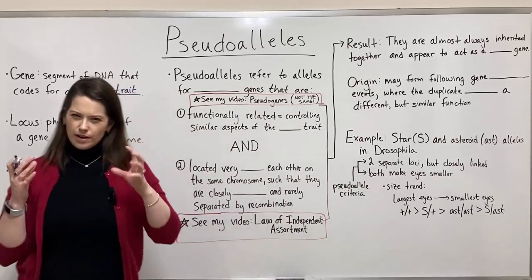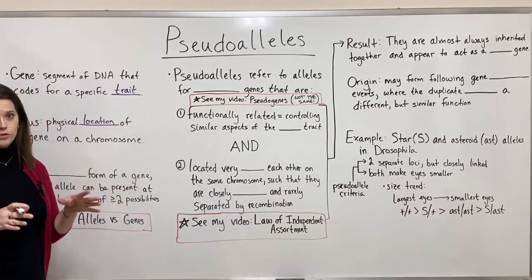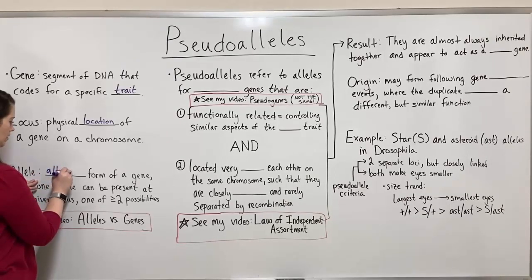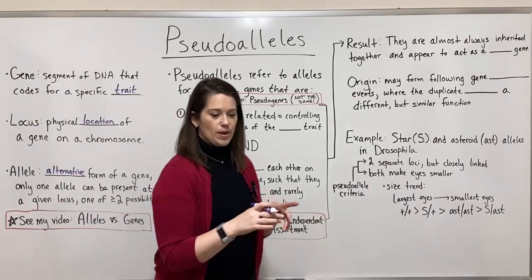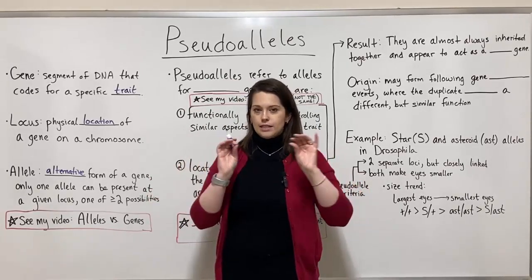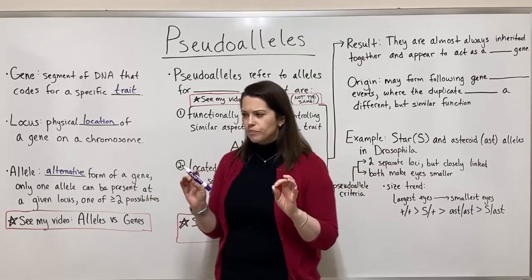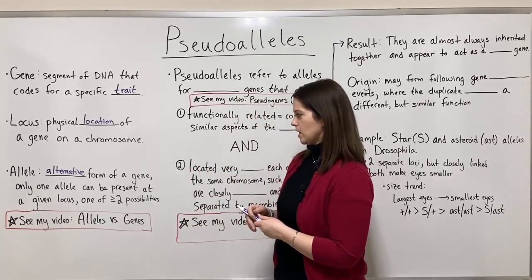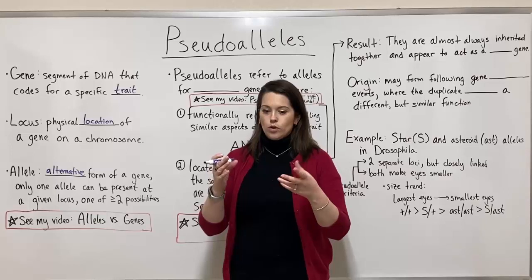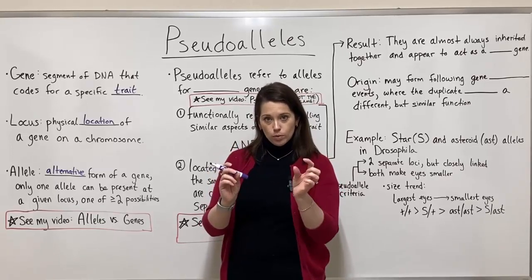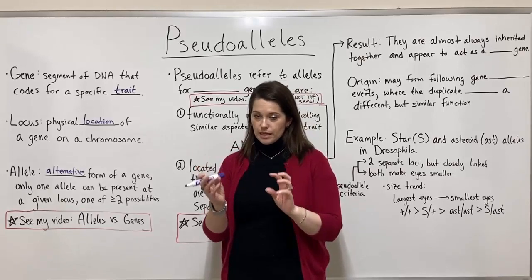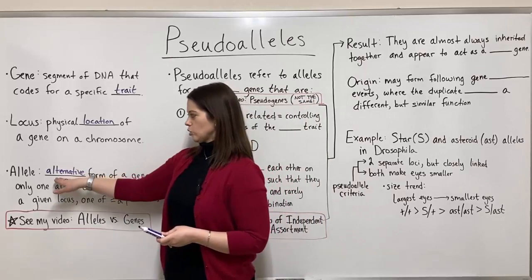Now we'll talk about allele, where it gets a little bit more difficult if you don't have a strong genetics background. An allele is an alternative form of a gene. Many genes can have multiple versions — differences in the nucleotide sequence caused by mutation that lead to different forms of a gene. Some of the best-known examples are from Mendelian genetics: Gregor Mendel's pea plants had a purple allele and a white allele for flower color, and green or yellow alleles for seed color.